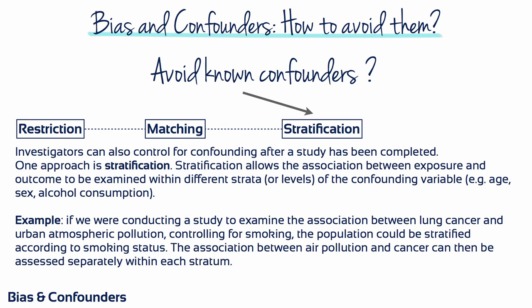A third option is called stratification. This is where investigators can control for confounding after a study has been completed. Stratification allows the association between exposure and outcome to be examined within different strata or levels of the confounding variable — for example, age, sex, alcohol consumption. If we were conducting a study to examine the association between lung cancer and urban atmospheric pollution, controlling for smoking, the population could be stratified according to smoking status. The association between air pollution and cancer can then be assessed separately within each stratum.